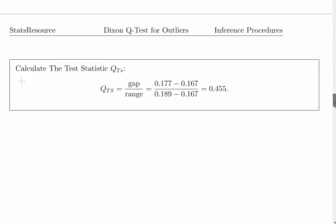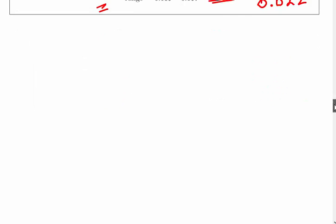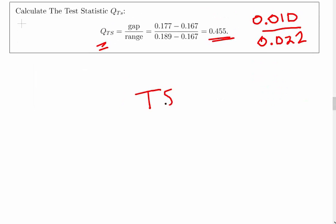The test statistic is gap over range: 0.177 minus 0.167 divided by the range 0.189 minus 0.167. That is 0.455. The range is 0.022, so our test statistic is 0.455.